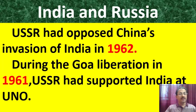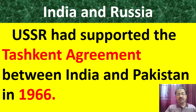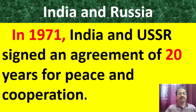The USSR opposed China's invasion in 1962 and supported India economically and militarily. During the liberation of Goa, USSR supported India at the UN, arguing that Portugal had no right over Goa and must vacate it as an integral part of India. USSR also arranged the Tashkent meeting between India and Pakistan — Tashkent being the capital of Uzbekistan — where both countries signed a bilateral agreement in 1966, soon after the 1965 war. In 1971, India and USSR signed a 20-year peace and friendship treaty, renewed every 20 years.